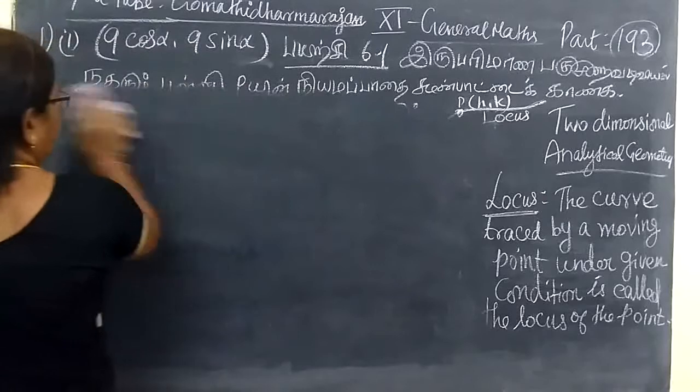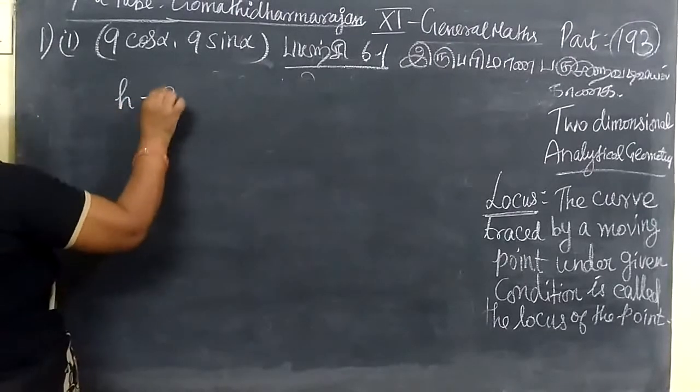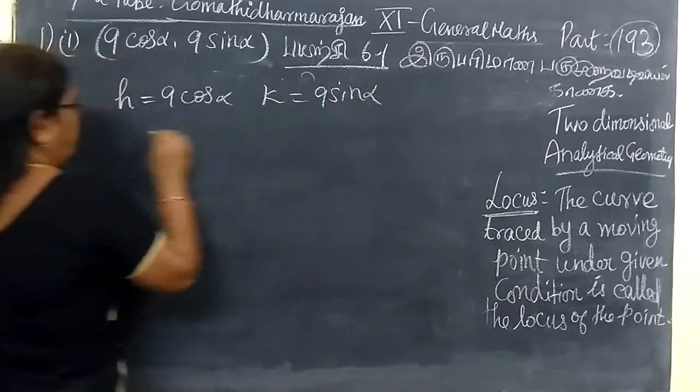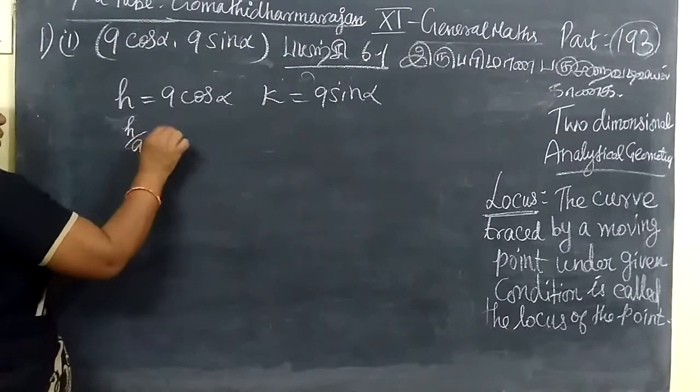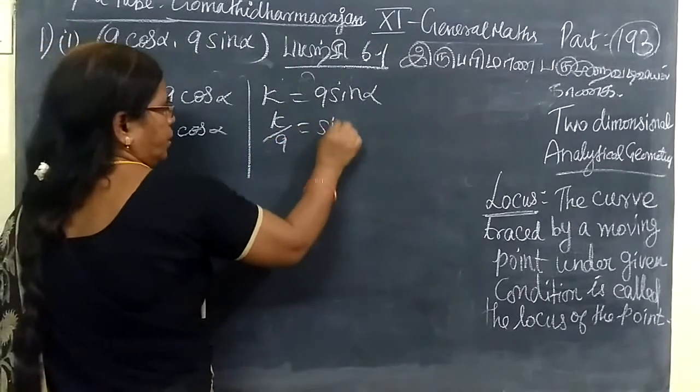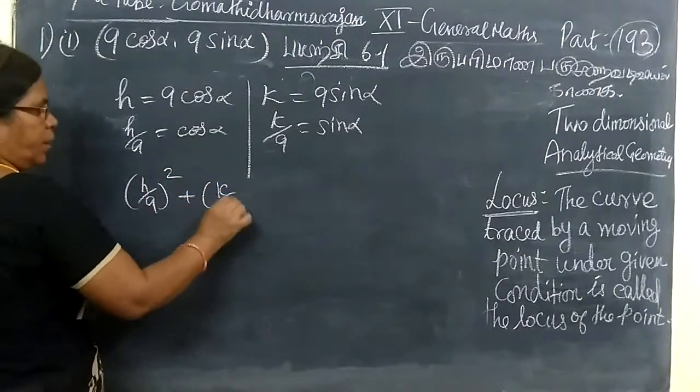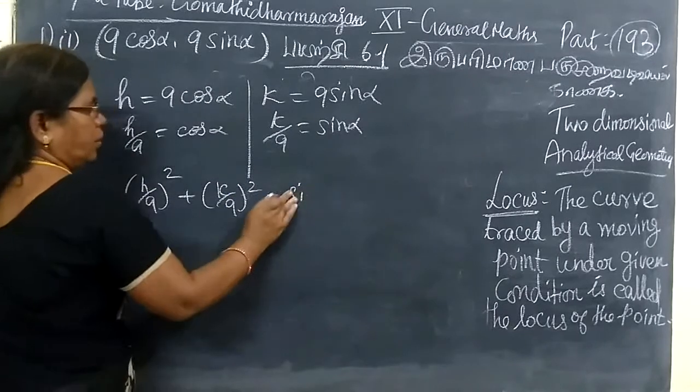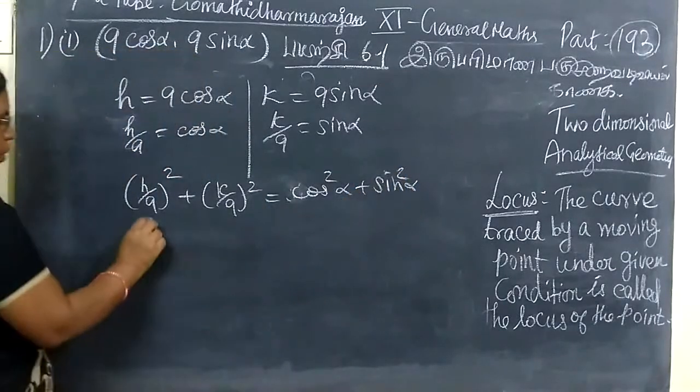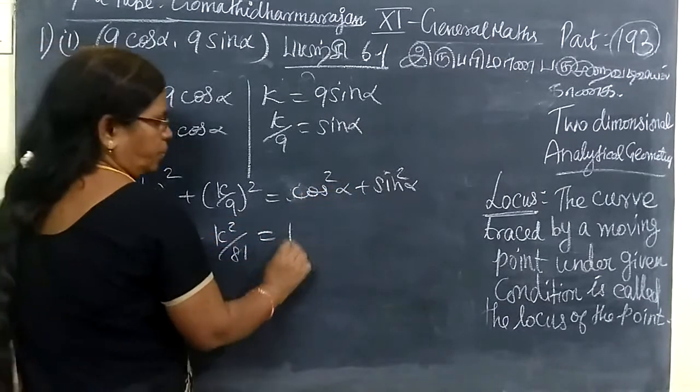So, this is 9 cos alpha, this is 9 sine alpha. h equals 9 cos alpha, then k by 9 equals cos alpha. So h by 9 for square plus k by 9 for square equals cos square plus sine square. This is nothing but 1.